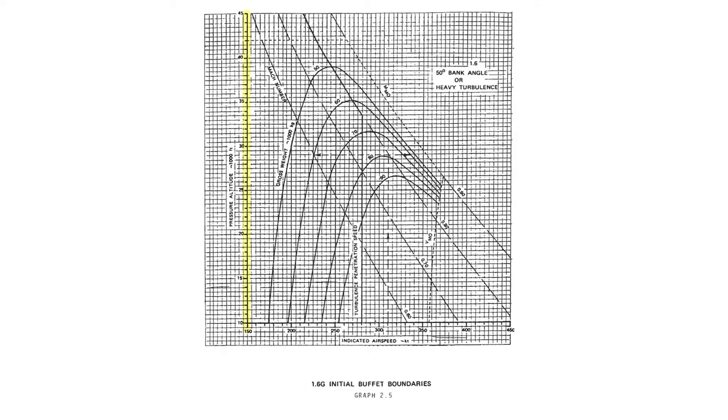Let's decipher these charts a little more. I'm going to be looking at the heavy turbulence chart here if you want to follow along. On the left side we can see the altitude or pressure altitude which is equivalent to the flight level. On the bottom we have the indicated airspeed. The curves are the Buffet Boundaries themselves depending on the weights. On the left side of the curve it represents the low speed Buffet Boundary and on the right side it represents the high speed.